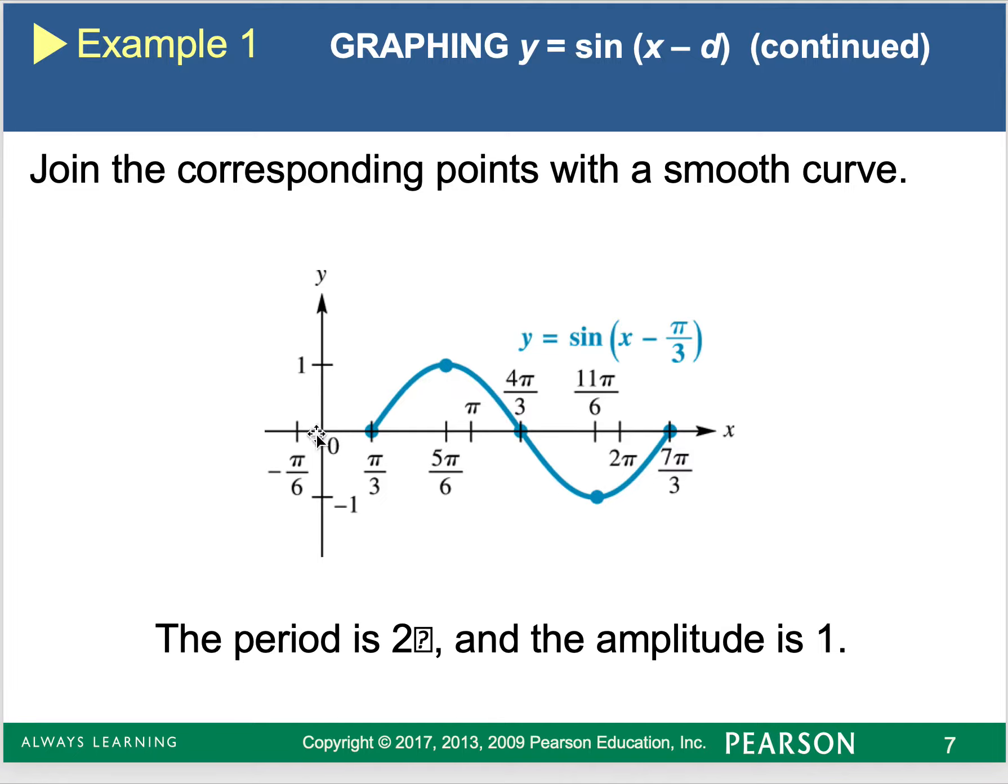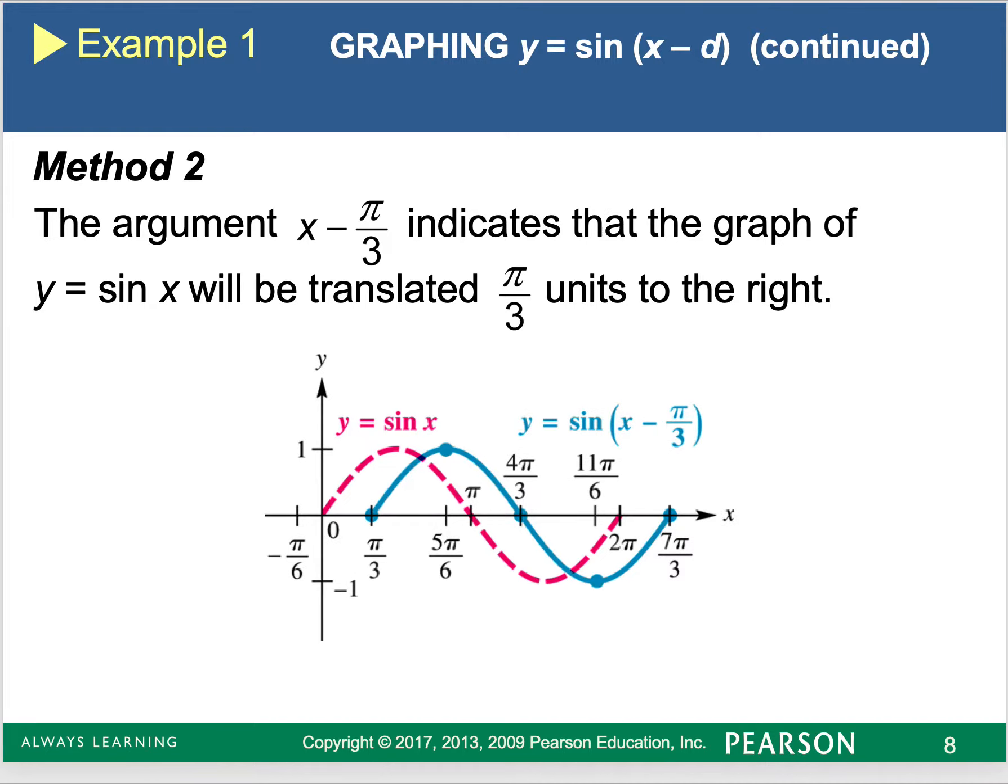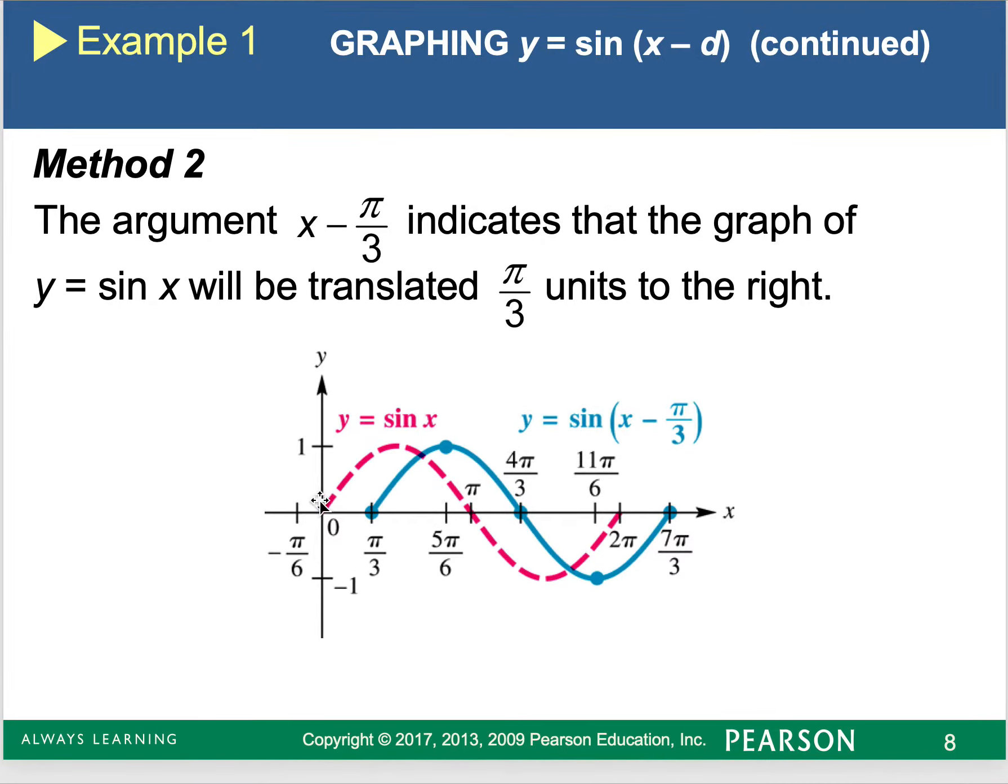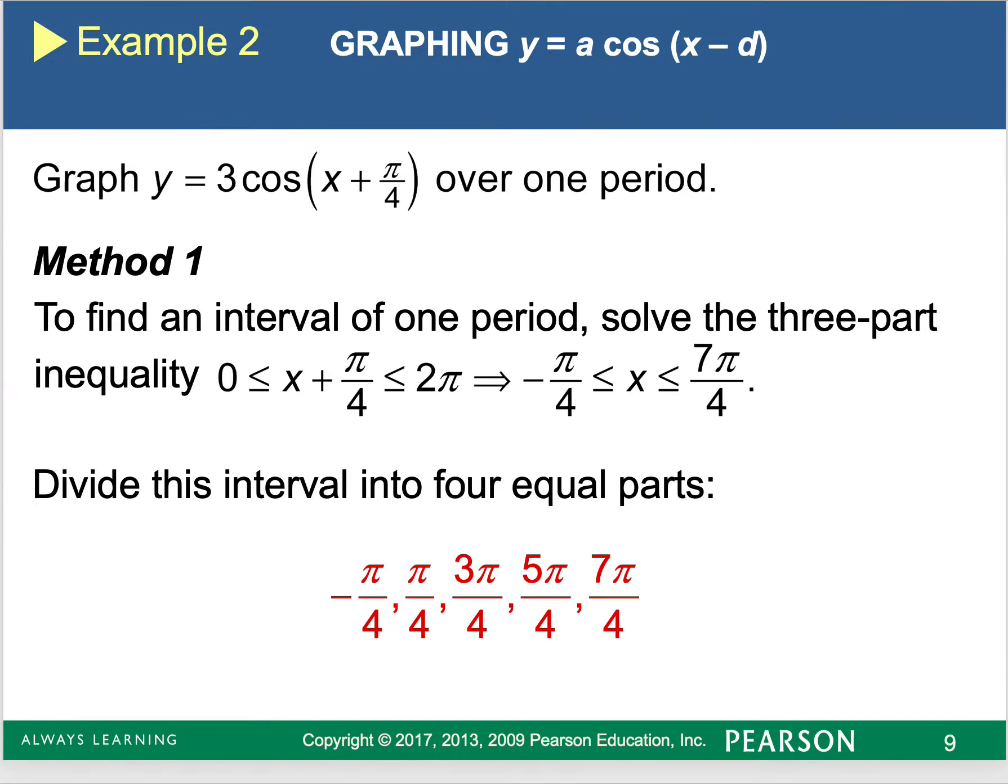Now, like I said, I prefer sketching the graph as it is, like this, the 2π, and then taking every point after the fact and shifting it over π over three. But you could do it either way. This is an example of how it's been shifted. And that's the method two that it talks about. So you draw the sine curve as normal, and then you're just taking each of those key points and shifting them over π over three. It doesn't matter how you do it. We'll take it either way.